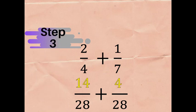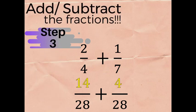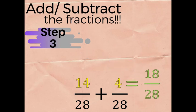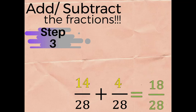Step three: we can now add the fractions. So 14/28 plus 4/28 gives us 18/28. But 18 and 28 are still divisible by 2, so we get its lowest term by dividing both numerator and denominator by 2, which gives us 9 over 14.